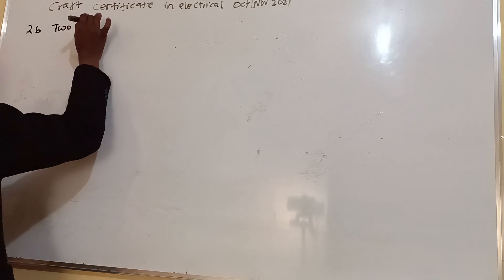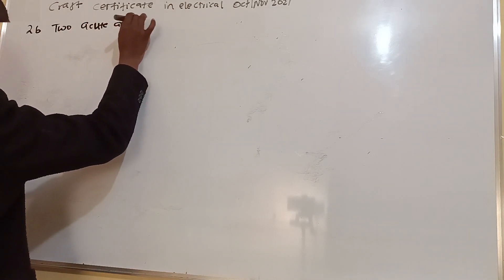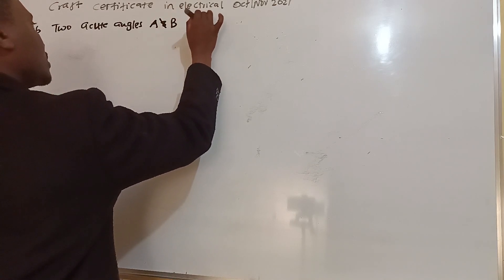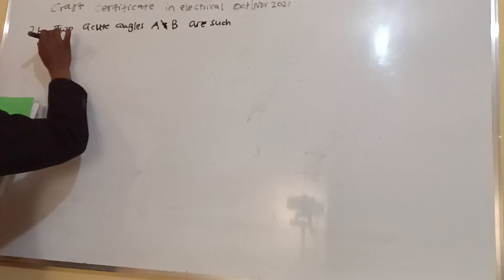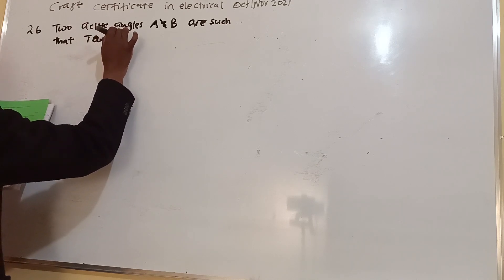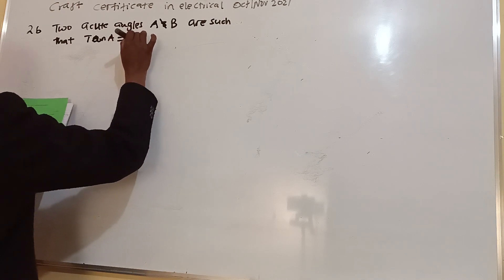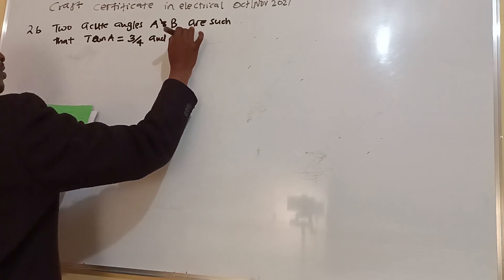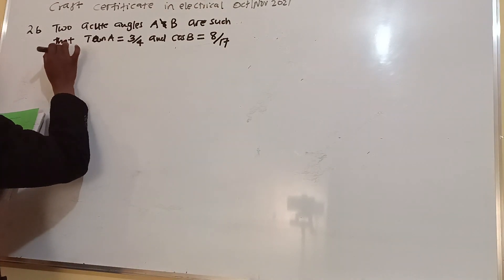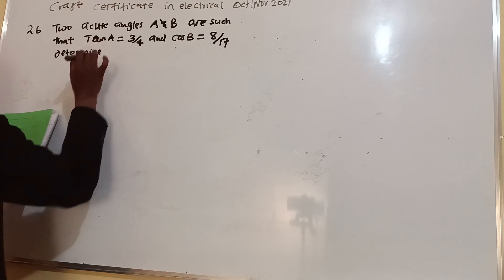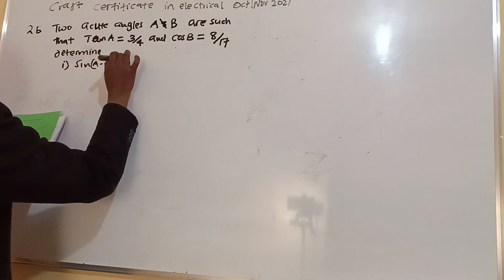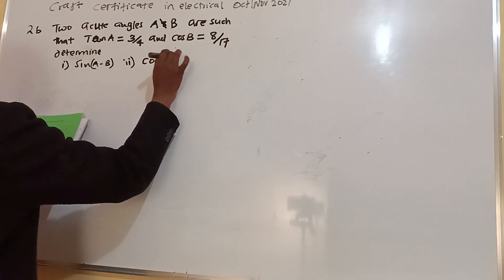The question states: given two acute angles A and B, such that tan A is equal to 3 over 4 and cos B is equal to 8 over 17, determine sin(A minus B) and cos(A minus B).